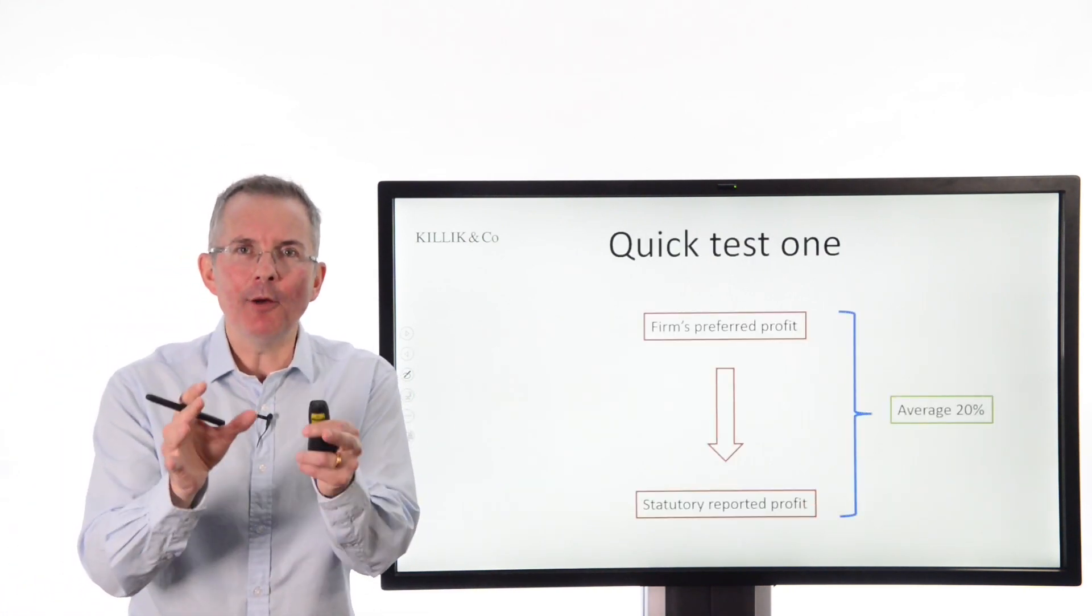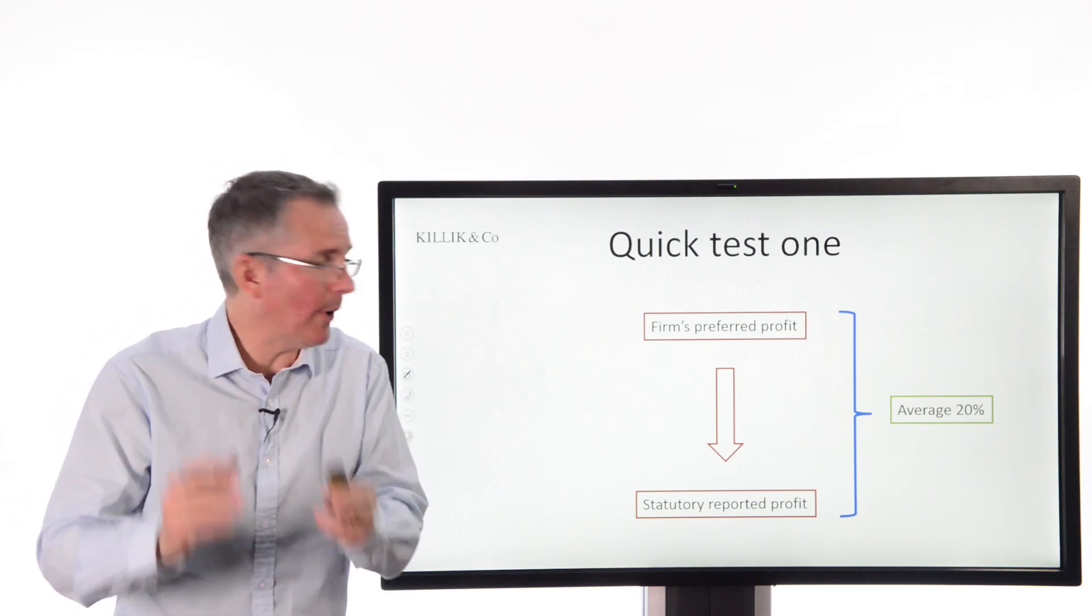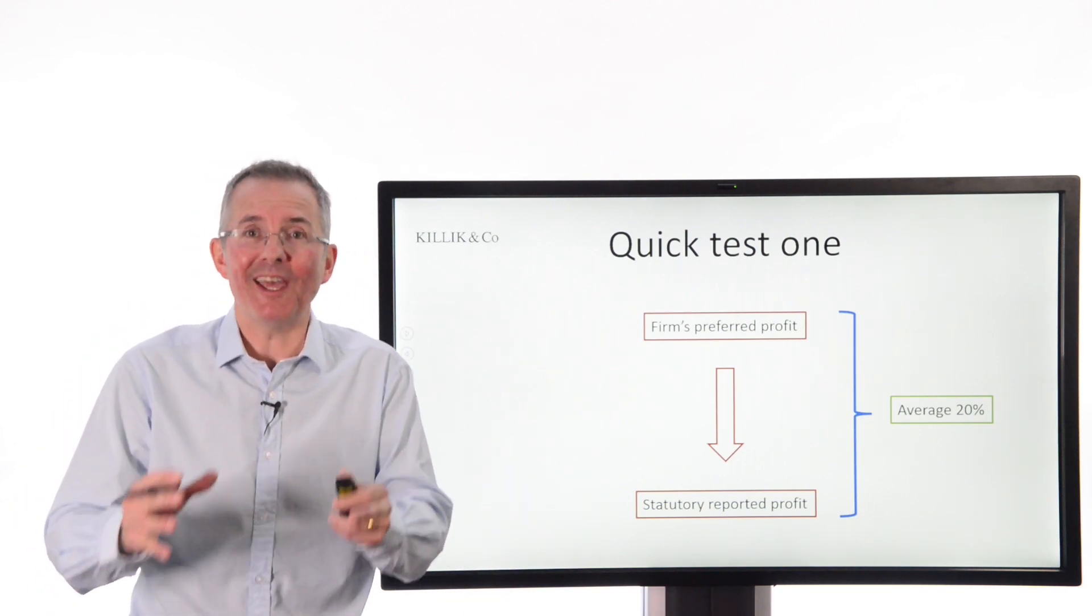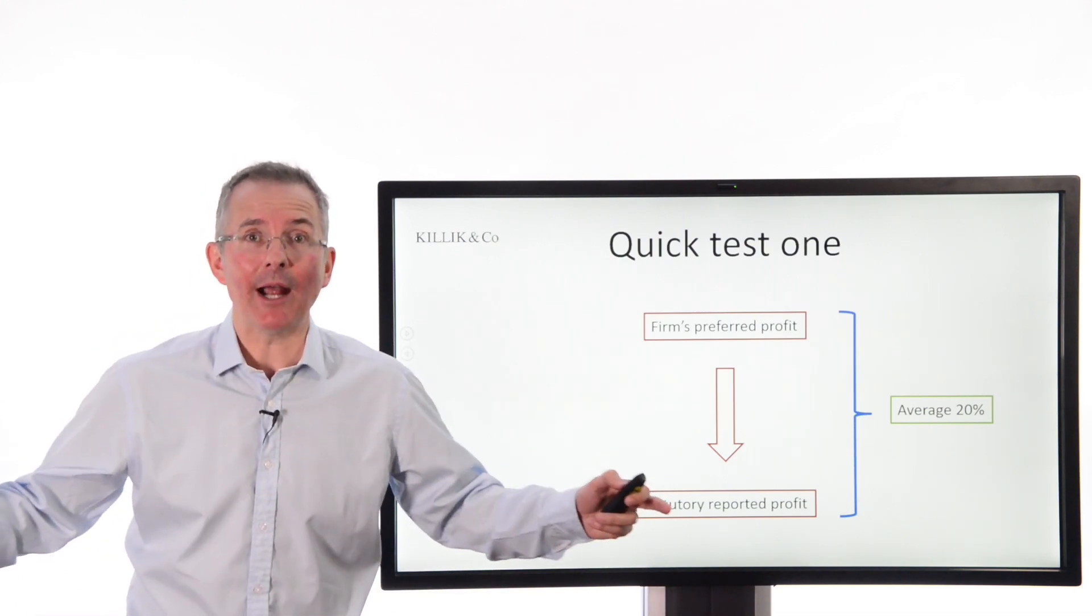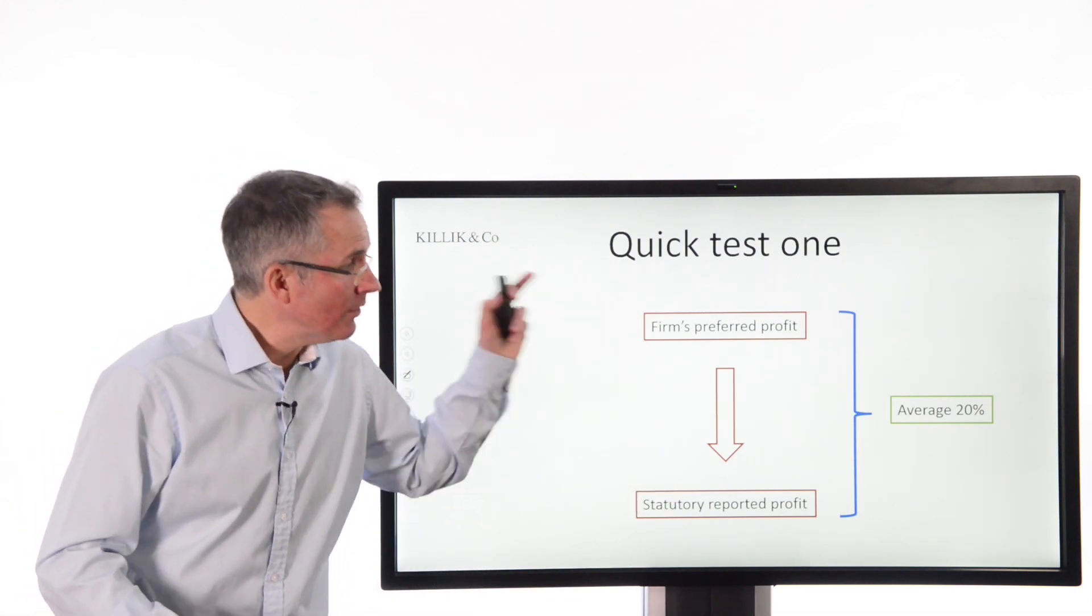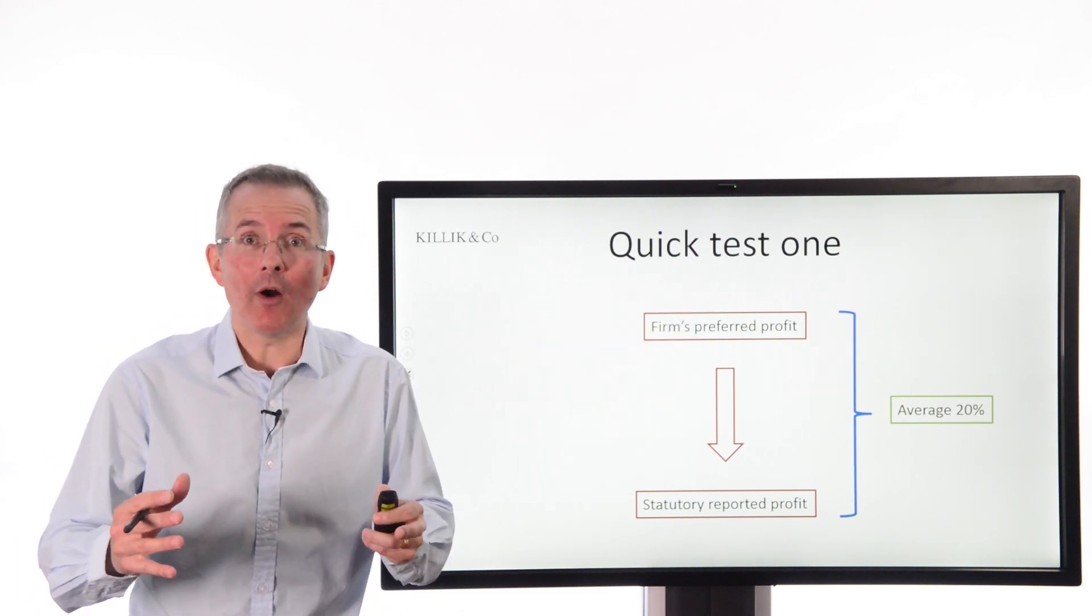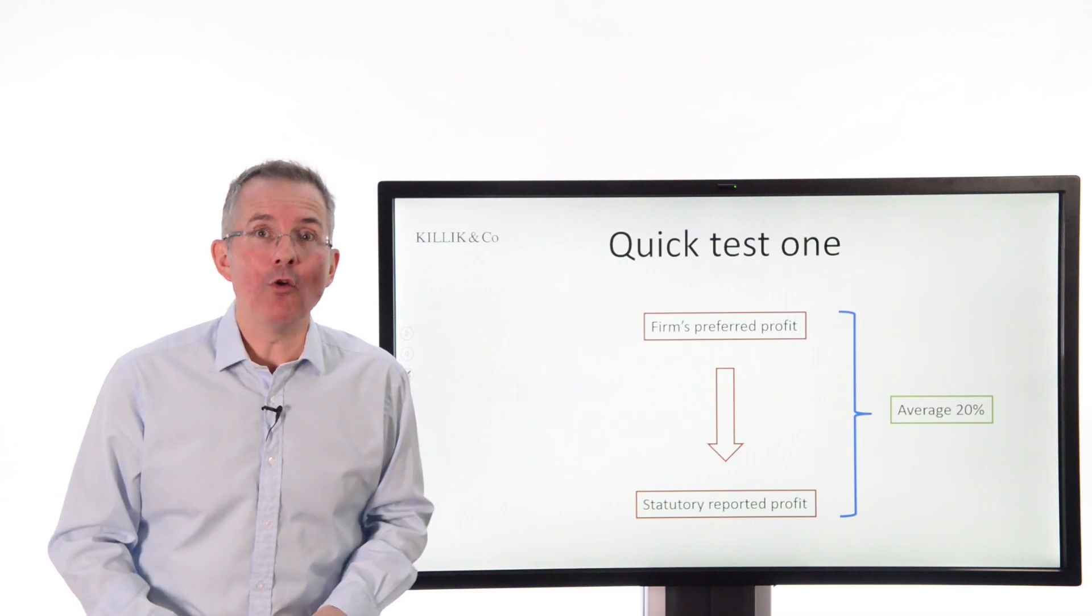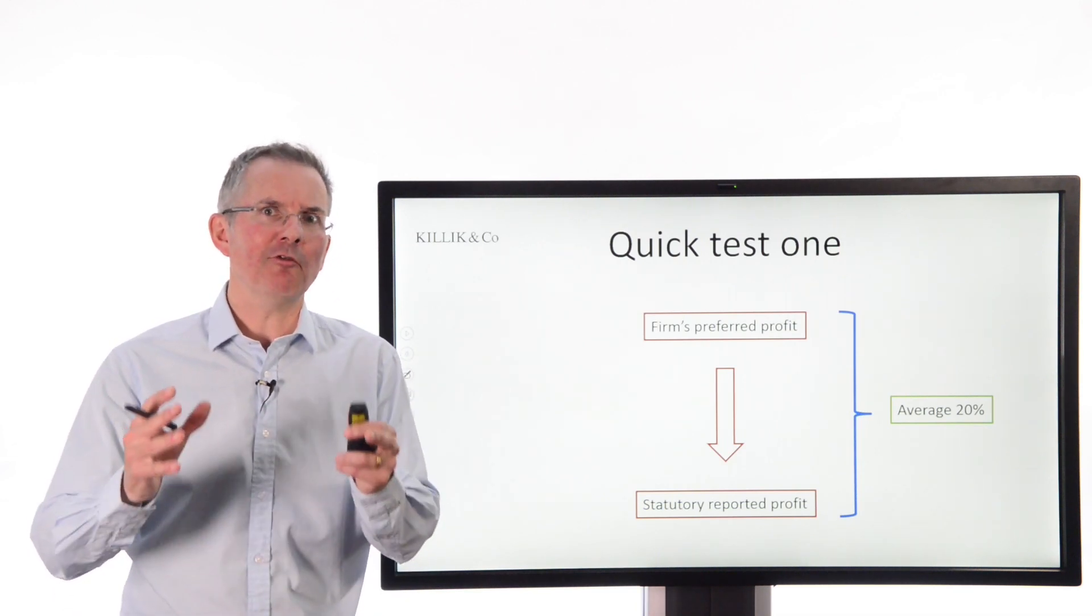Test one, the number the firm's put in front of you, its preferred profit figure if you like, is that miles away from the statutory reported profit it has to report. On average in the US that gap is around 20% at the moment, so just be aware that there can be quite a big gap between the two and if there is, you need to do a bit more homework. You may not be able to trust the company director's favourite number.